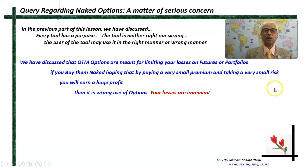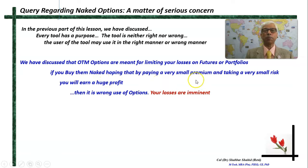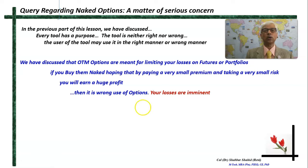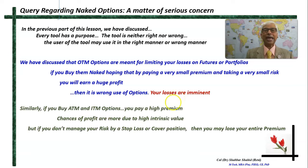We discussed that OTM options, or out of the money options, are meant for limiting your losses on your futures position or your portfolios. But if you buy them naked, hoping that by paying a very small premium and taking a very small risk you will be able to earn a huge profit, then that is the wrong use of options. Your losses are imminent and you are likely to lose your premium.